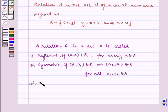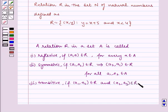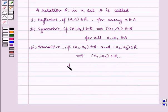And transitive if (a₁, a₂) belongs to R and (a₂, a₃) belongs to R, which implies (a₁, a₃) belongs to R, for all a₁, a₂, a₃ belongs to A.